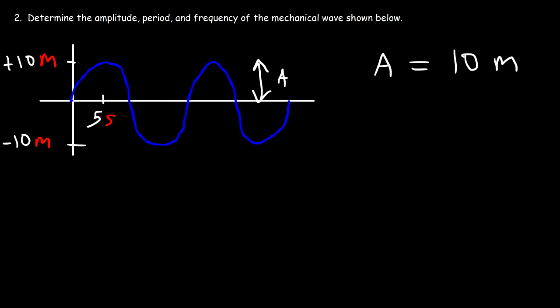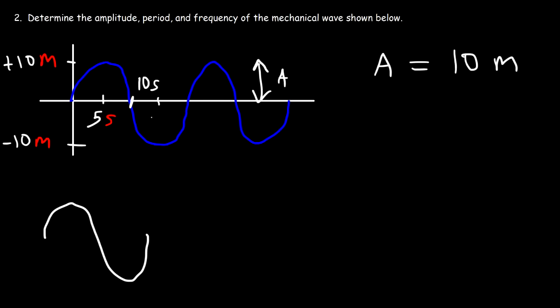Now what about the period and the frequency of the wave? The period is the time it takes to make one complete cycle. Notice that five seconds corresponds to the first quarter of the cycle. At the second quarter it's 10 seconds, at the third quarter it's 15 seconds, and at the full cycle it's going to be 20 seconds. So the time it takes to make one complete cycle is 20 seconds.